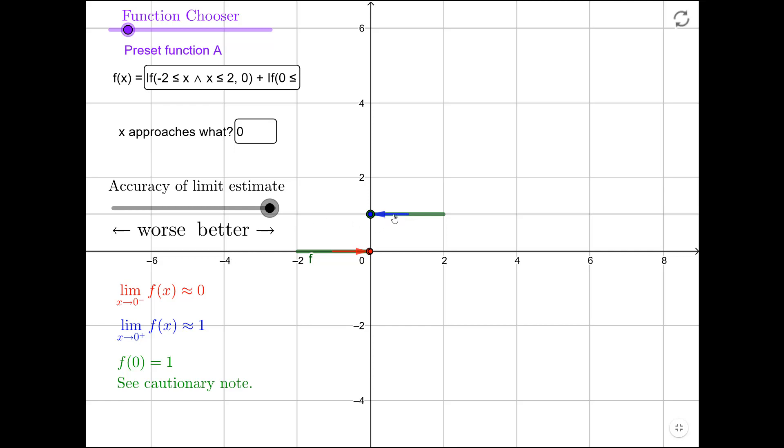Likewise, from the right hand side, the blue arrow we could see as we come in along the curve from the right side, we seem to be approaching a y value of 1. So the limit as x approaches 0 from the right of f(x) is approximately 1. And in green I've indicated that at 0 itself the function takes the value 1.